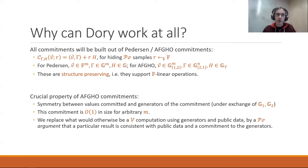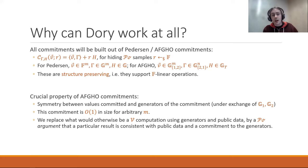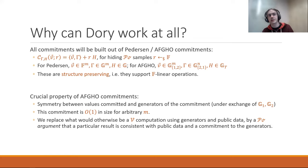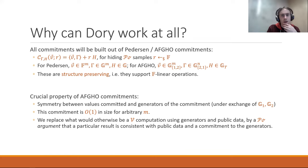So what we do routinely is find some verifier computation that needs to be done using public generators and some other public data. Instead of having the verifier do that — since the generators might be quite numerous — the verifier and prover have already computed some commitment to those generators with respect to second-sided generators. We offload the entire computation onto the prover. The prover gives us some auxiliary argument that tells us that if we had done this particular operation on this public data, we would have gotten the right answer. You can think of this as something like the computational commitments idea from the Spartan paper.